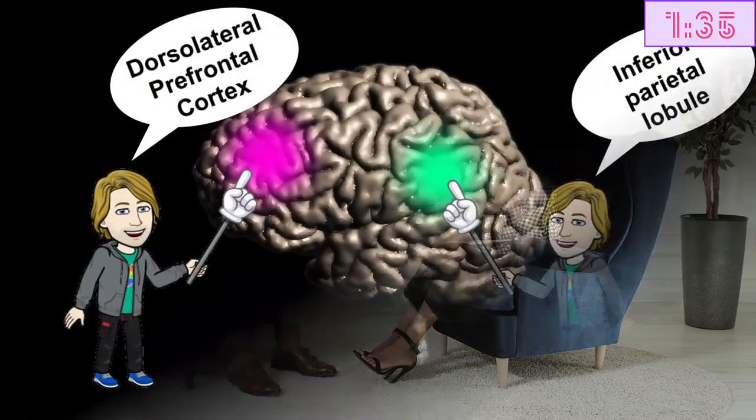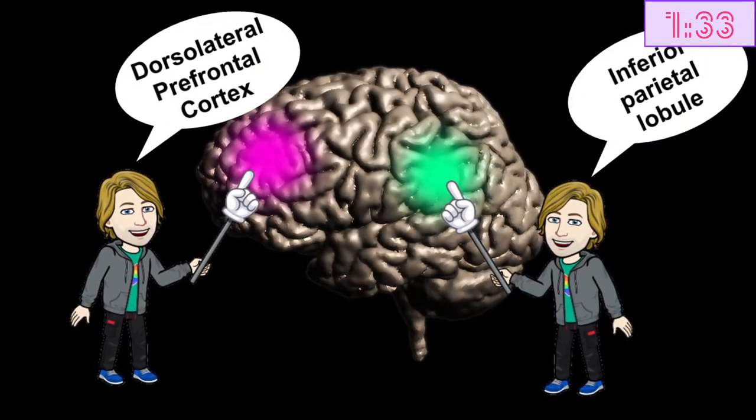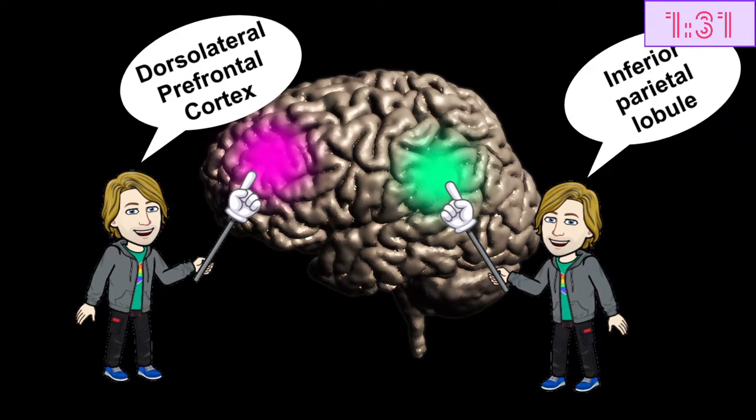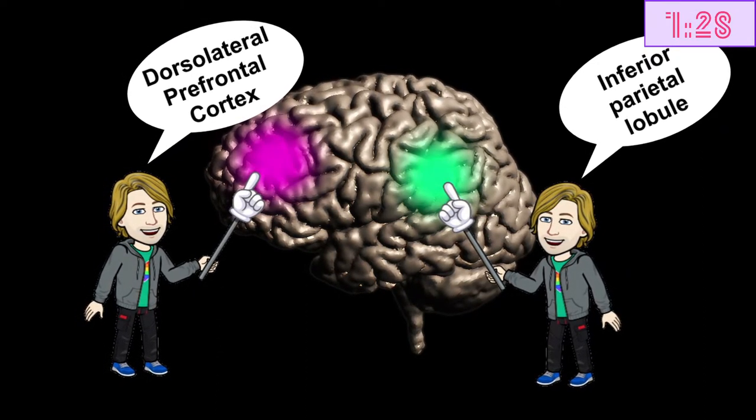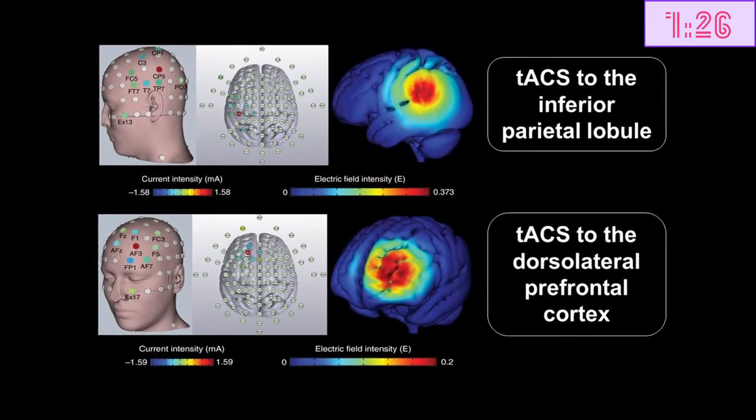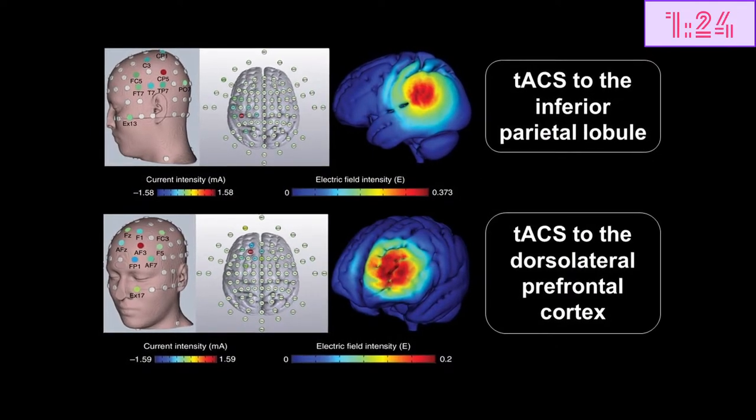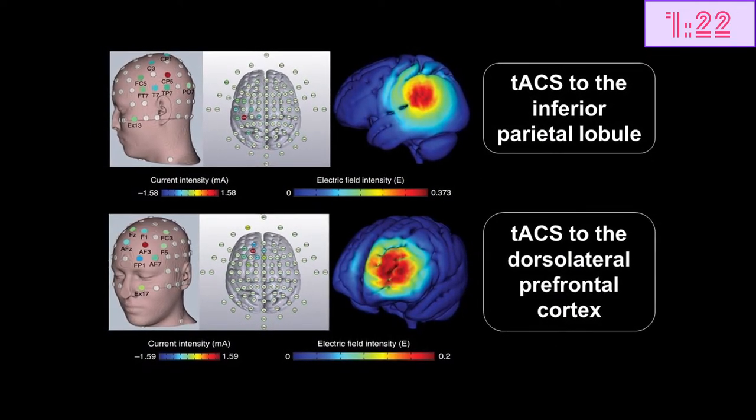The TACS was applied to two regions, the dorsolateral prefrontal cortex and the inferior parietal lobule. To target these regions optimally, the researchers used computational models to estimate how the electric currents would distribute in the brain.